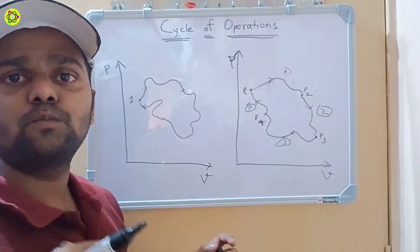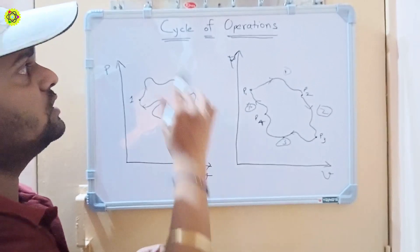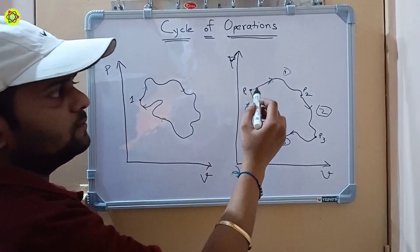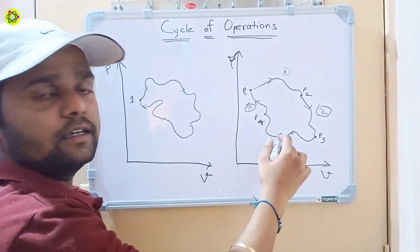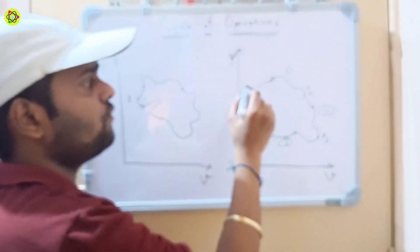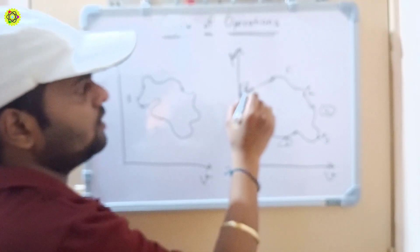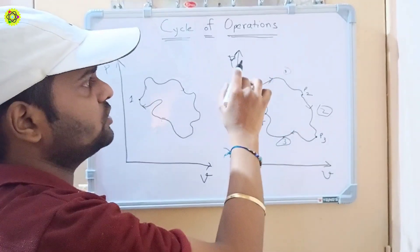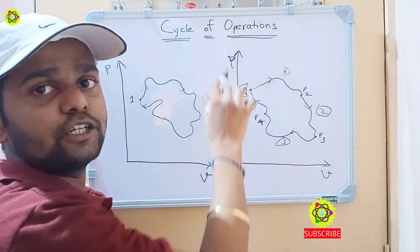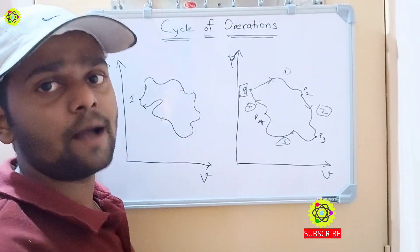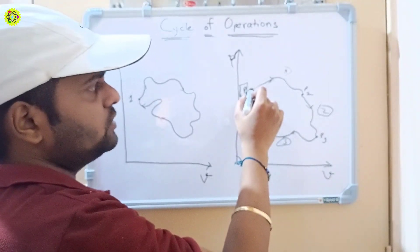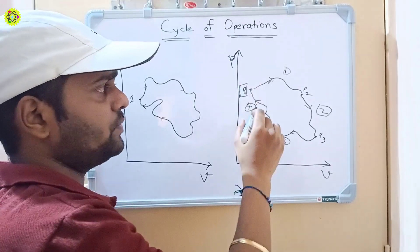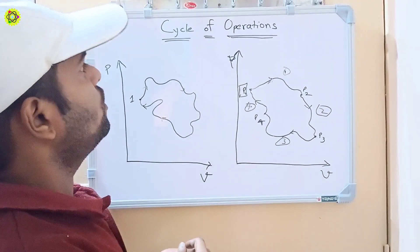In this series of processes — path one, path two, path three, and path four — our initial and final points or states are the same, that is P1. All these processes take place with changes in pressure and volume, but the start point and the end point of the overall series are the same. So this is the cycle of operations.